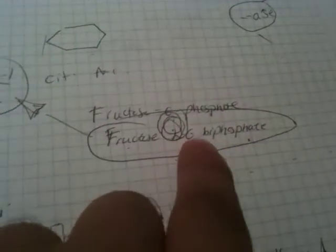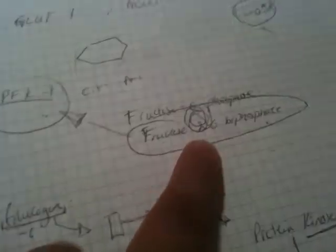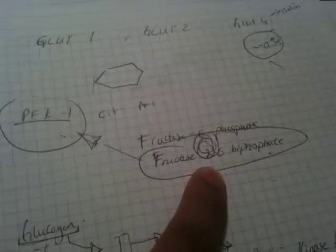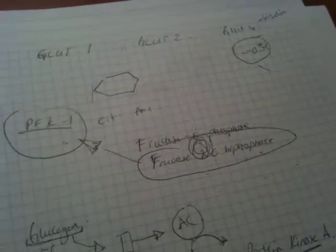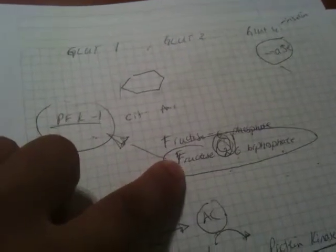Fructose 2,6-bisphosphate — don't get confused with fructose 1,6-bisphosphate, which is not in this pathway. Fructose 2,6-bisphosphate is actually just an intermediate, you can call it an intermediate, which monitors the hormone levels in the blood. What it monitors is glucagon and insulin. I'll explain that very soon.